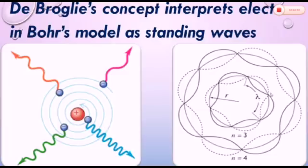See these waves. So electrons are considered as standing waves, circular standing waves. Therefore, their wavelength lambda will be equal to 2 pi r over n. 2 pi r is the circumference of the circle, and n is the shell number, like n is 3, n is 4.